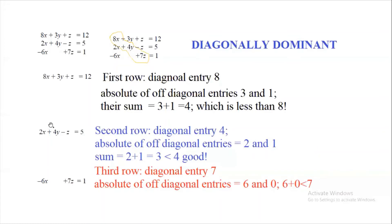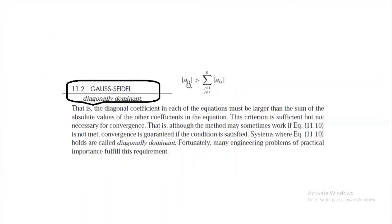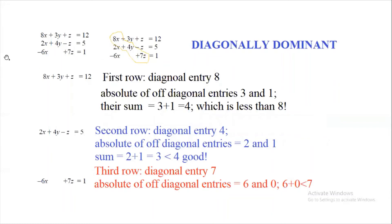For the second row, 2x + 4y − z = 5, the diagonal entry is 4 and the off-diagonal entries are 2 and −1. Taking absolute values: |2| + |−1| = 2 + 1 = 3, which is less than 4. So the condition A22 > |A21| + |A23| is satisfied for the second row.